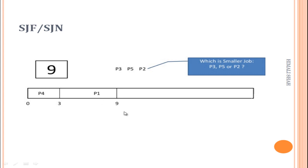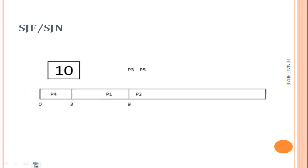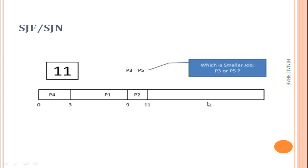Up to time 9, processes P3, P5, and P2 have arrived. We compare their burst times: P3 is 8, P5 is 4, and P2 is 2. The smallest is P2, so P2 executes next for 2 units of time. 9 plus 2 equals 11.